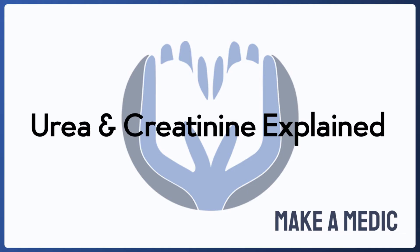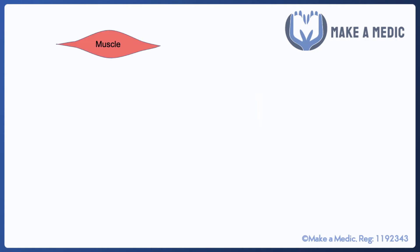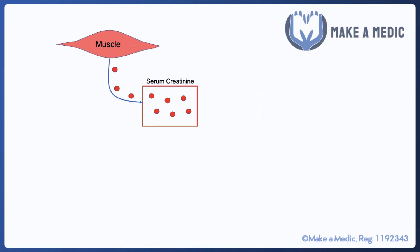Welcome to this Make a Medic tutorial. Today we're going to be discussing a couple of very commonly used terms: urea and creatinine. First, we'll talk about the physiology of creatinine. It's a byproduct of creatine metabolism within the muscle and it's produced at a relatively constant rate, which is dependent on the extent of your muscle mass. Someone who is more muscular and has a larger muscle mass will produce a greater amount of creatinine.